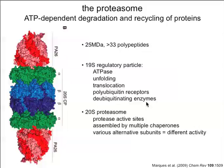The proteasome also involves some deubiquitinating enzymes. Here's the key polyubiquitin receptor, recognizing the protein to be degraded by the presence of that polyubiquitin tail. There is a set of enzymes that remove the ubiquitin so that it can go on and target other proteins for destruction. Once inside the 20S proteasome, we have our proteolytic active sites where we degrade that protein into typically seven-residue chunks. The proteasome is assembled by a whole host of chaperones, and there are alternative organizations to this molecule that determine precisely what its function is.